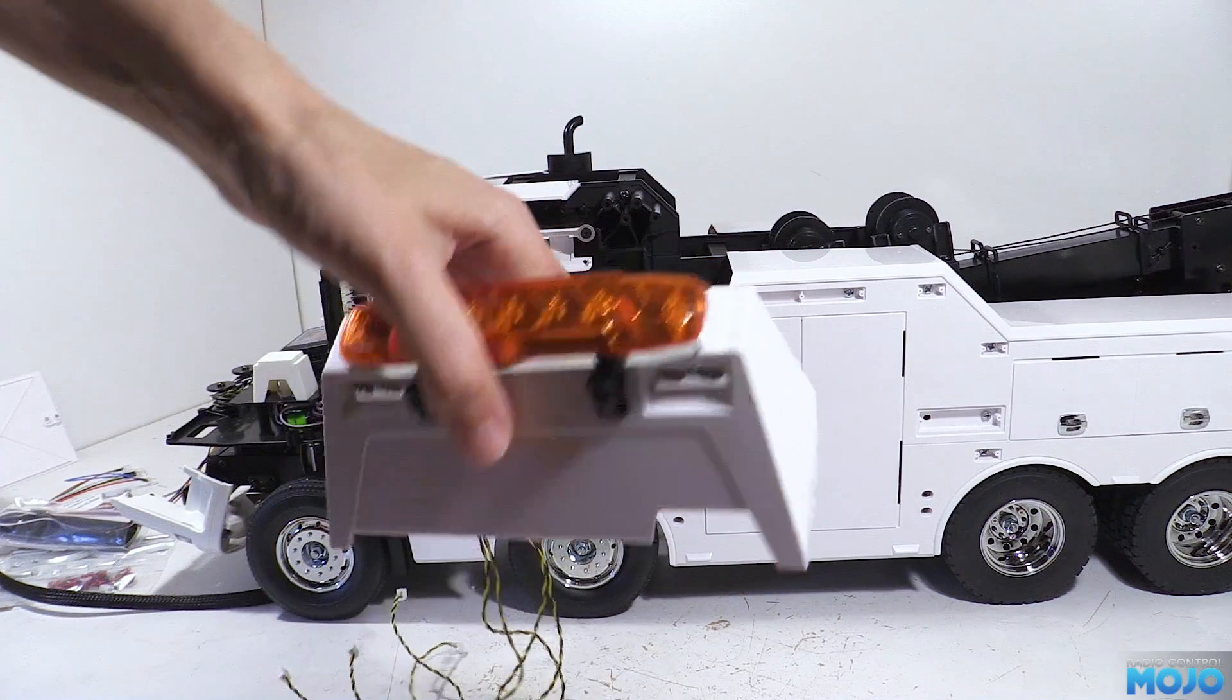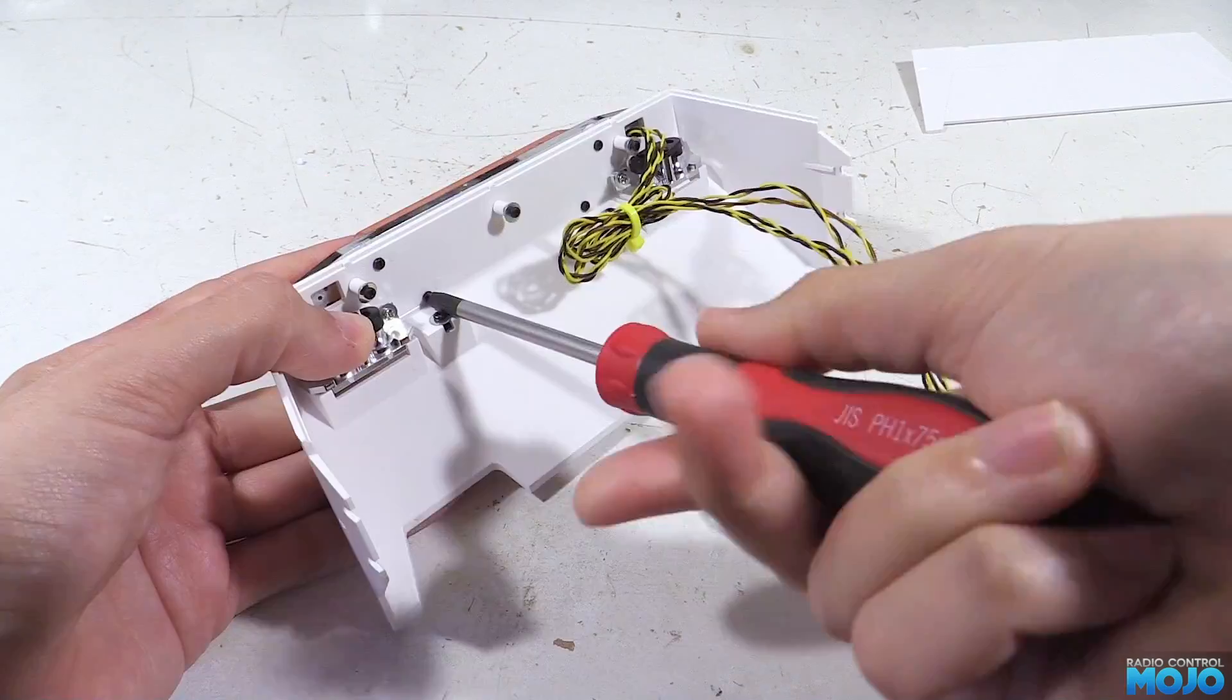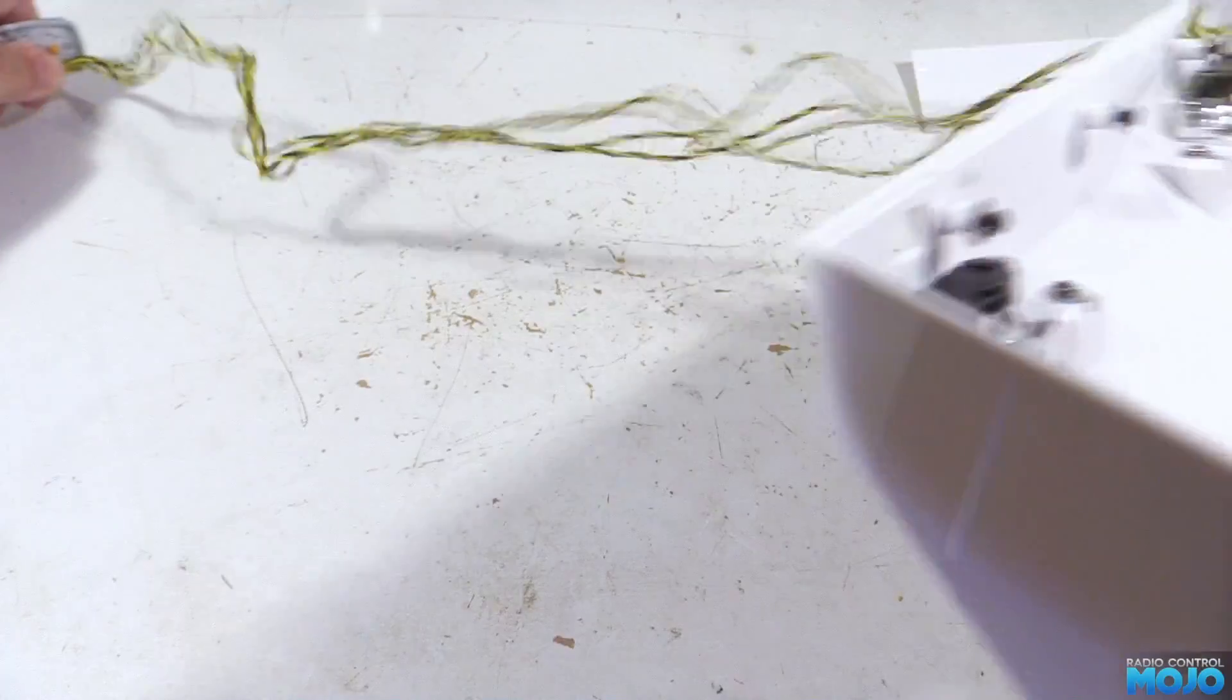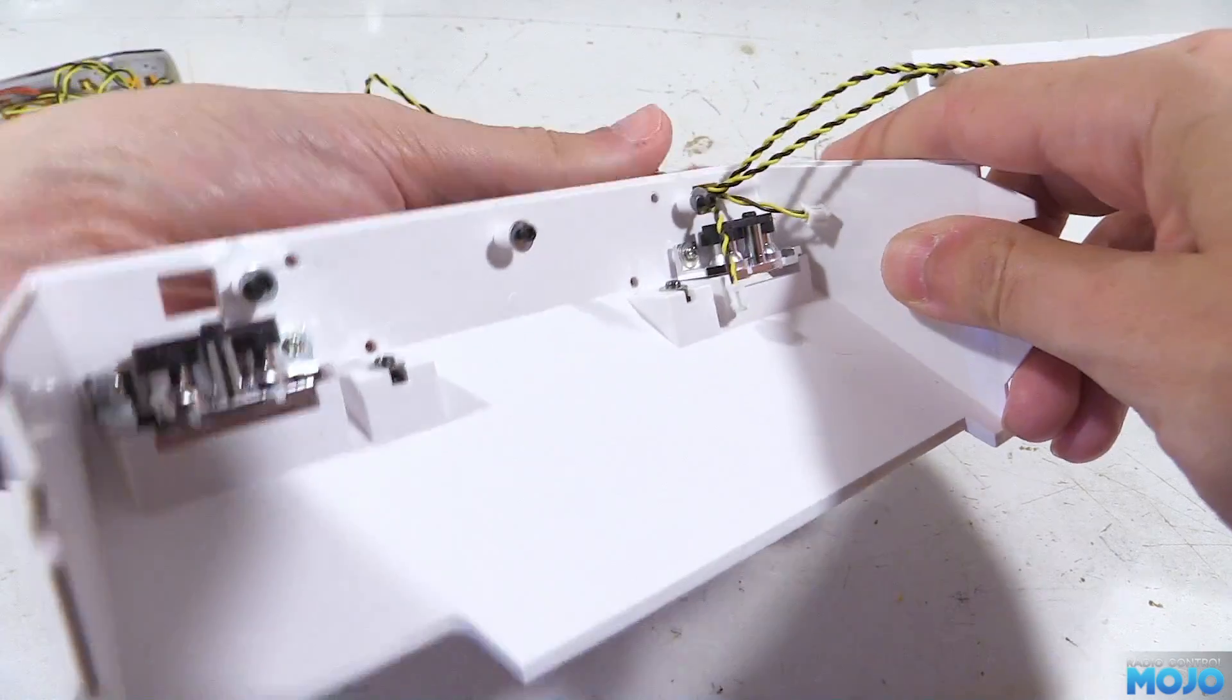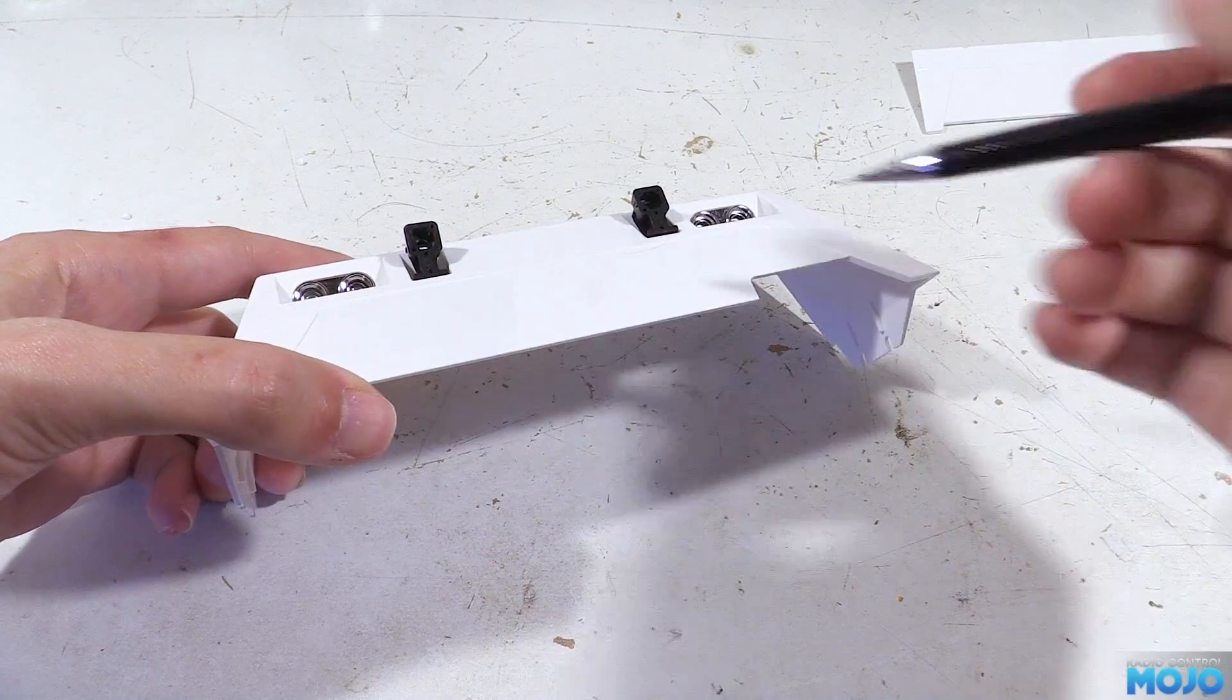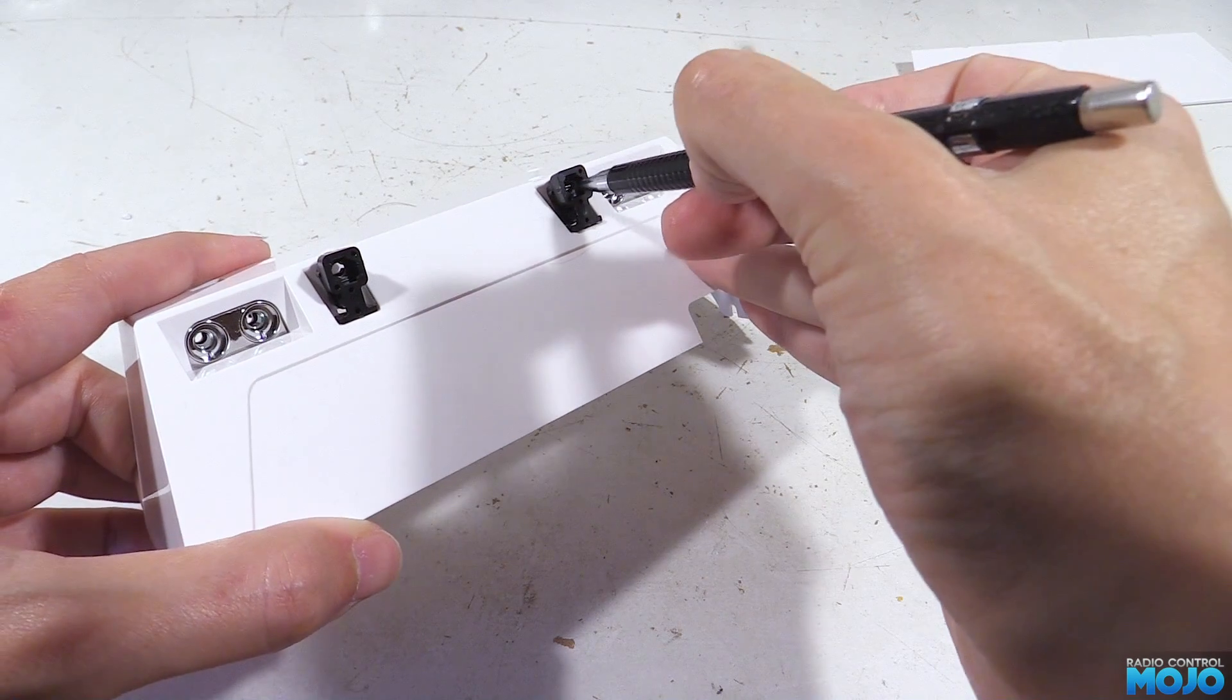Right here we have the top box much as we left it last time. To fit all the bits we need to strip it back to parts. We need to loosen the screws that attach the front panel and remove it. Take out the four screws that attach the beacon and we can remove that too.